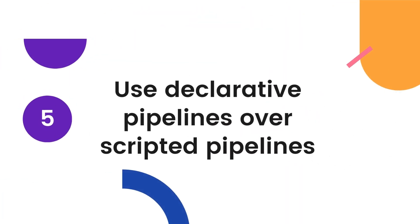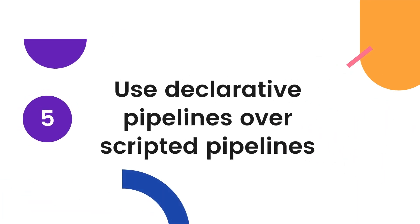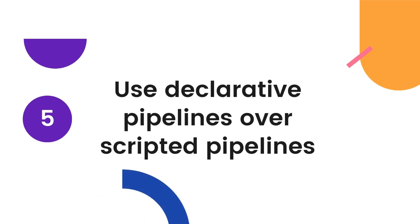Number 5: Use declarative pipelines over scripted pipelines, as they are simpler, more maintainable, and less error-prone. Declarative pipelines also provide better visualization of pipeline execution.